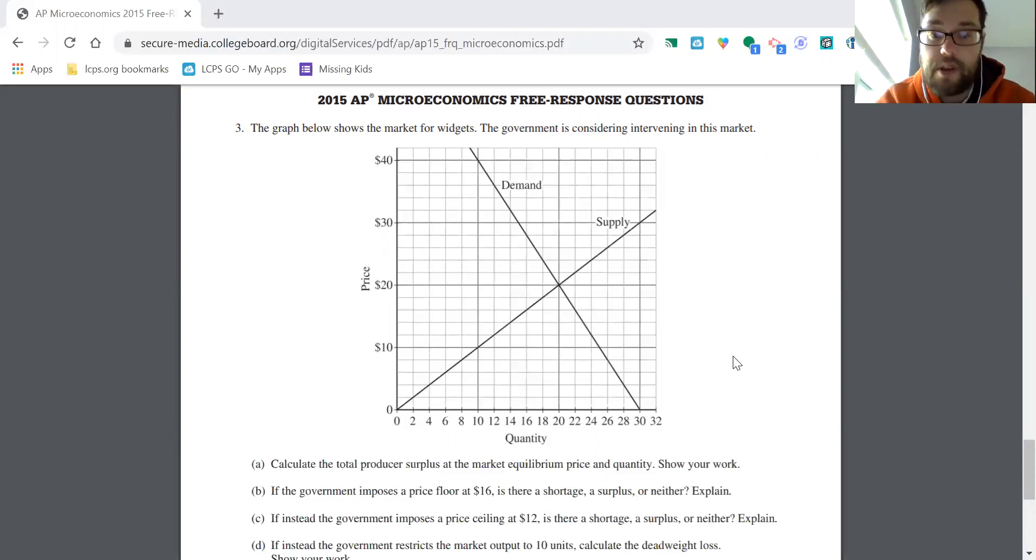So that's the market at equilibrium before the government intervenes. Calculate total producer surplus at the market equilibrium price and quantity. So producer surplus is going to be the area of this triangle, the area above the supply curve up to the price. All these companies are happy, they got this price way up here. They would have been willing to sell for way down here, for $2 for example, but they got the market price of 20. So they've got a lot of surplus.